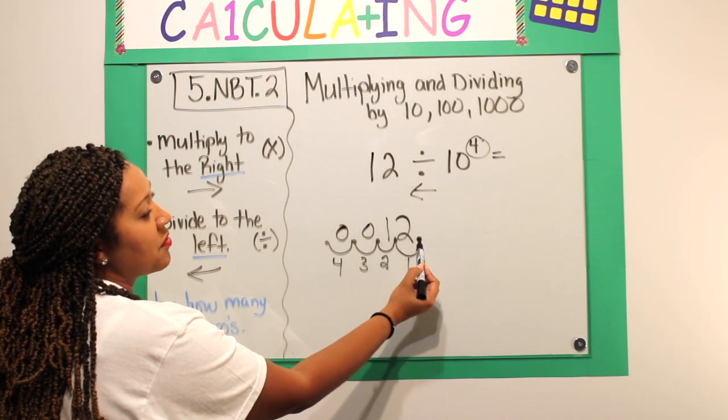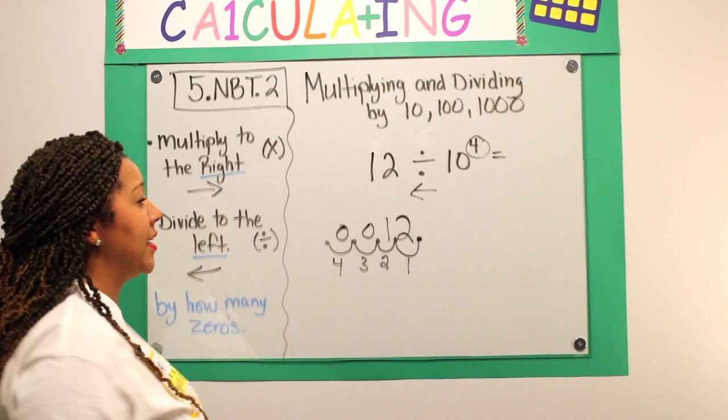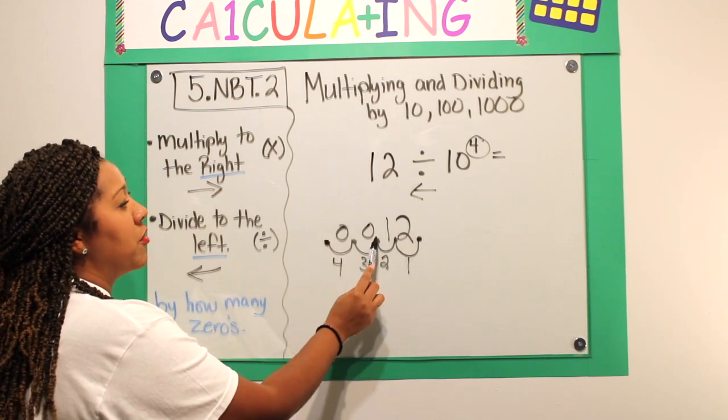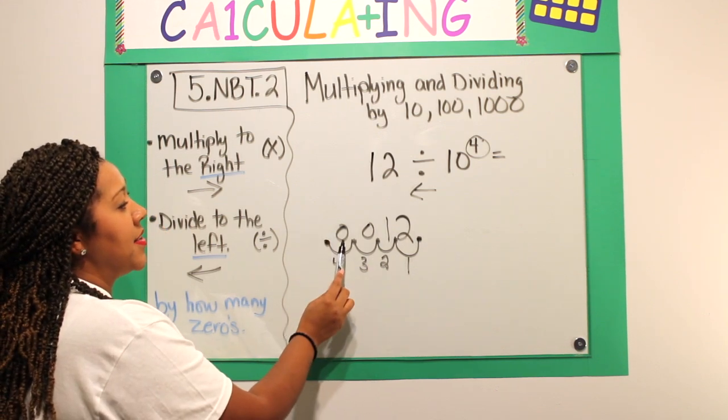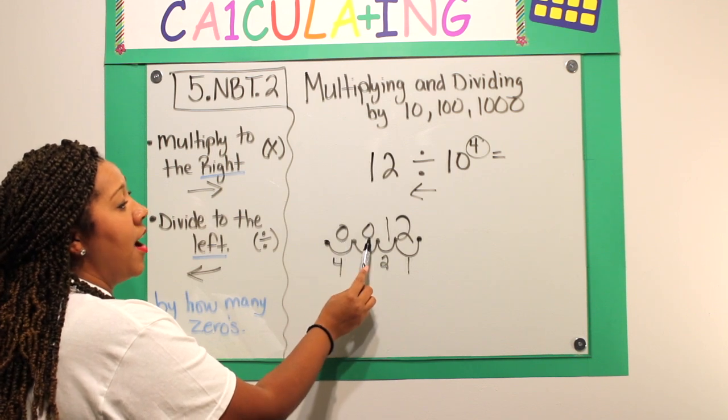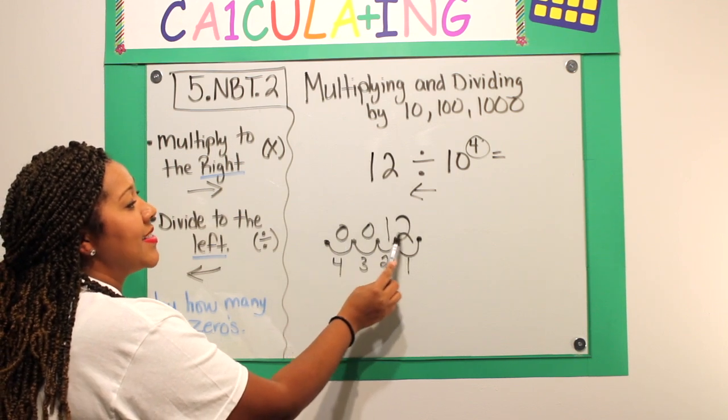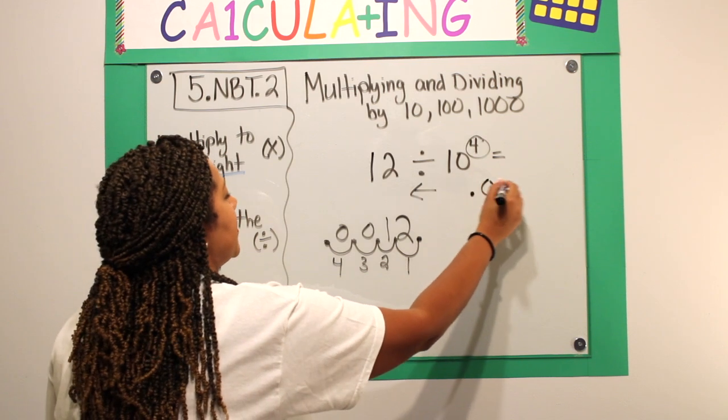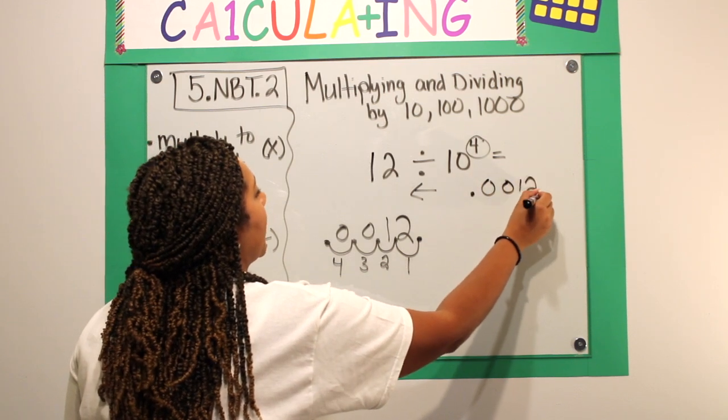My decimal shifted from right behind the ones place to now, I moved over four spaces. So, now this is my tenths, hundredths, thousandths, and ten thousandths. My answer is 0.0012.